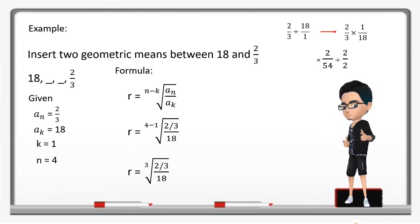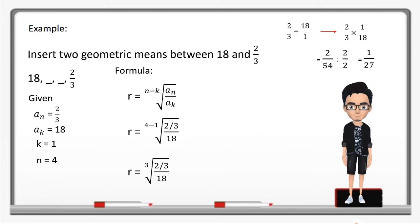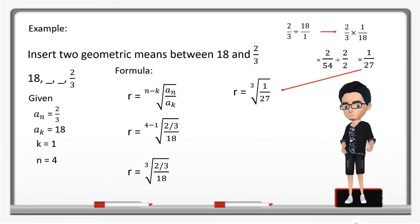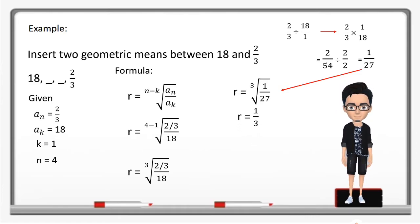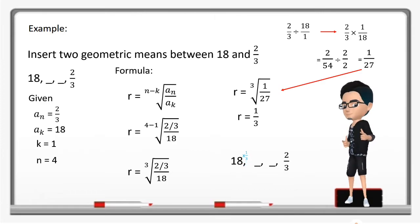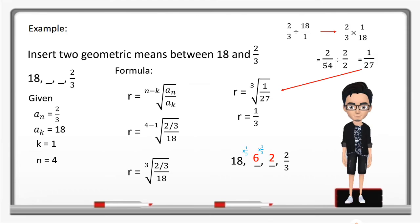So 2/3 divided by 18 equals 1/27. Therefore r equals the cube root of 1/27, which is 1/3. So our common ratio is 1/3. Now let's get our geometric means: 18 times 1/3 is 6, 6 times 1/3 is 2, and 2 times 1/3 is 2/3. So the geometric means are 6 and 2.